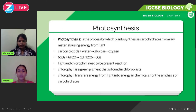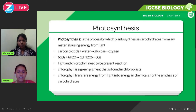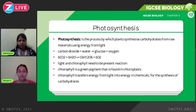The syllabus requires you to know the definition of photosynthesis, which is the process by which plants synthesize — meaning create or produce — carbohydrates from raw materials using energy from light. You need to know the word and chemical equations. The chemical equation is only for extended students, so if you're not on the extended syllabus, just know the word equation.